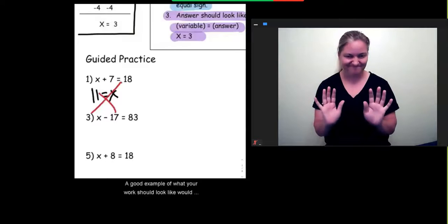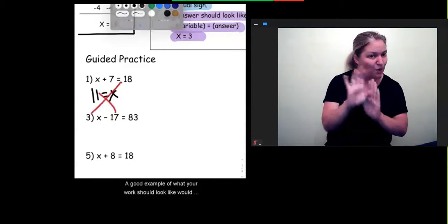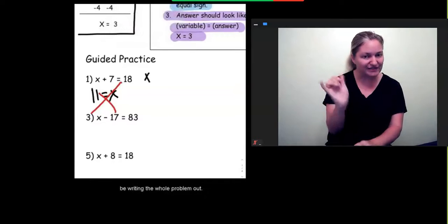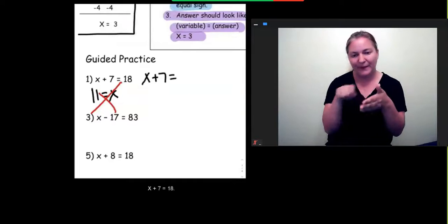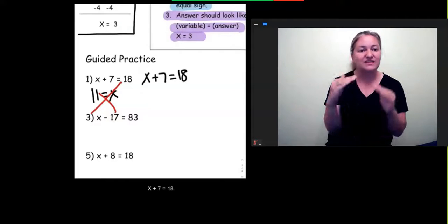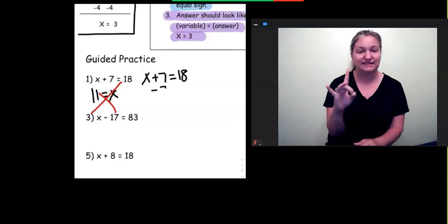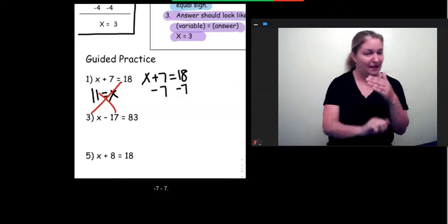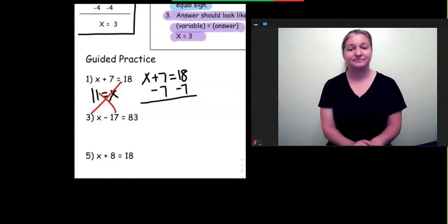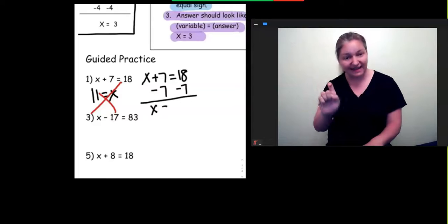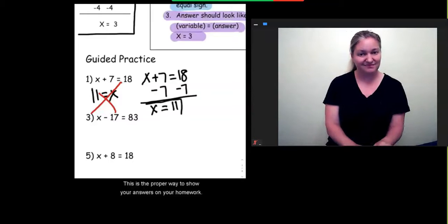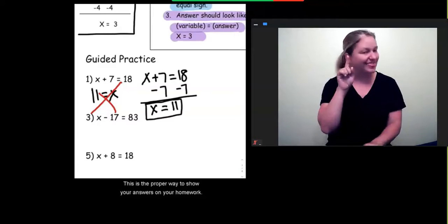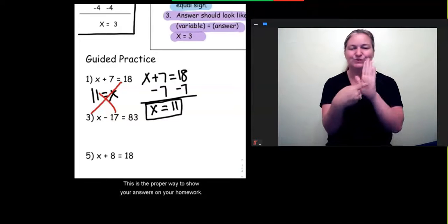A good example of what your work should look like would be writing the whole problem out: x plus 7 equals 18 minus 7 minus 7. Bring down our x. x equals 11. This is the proper way to show your answers on your homework.